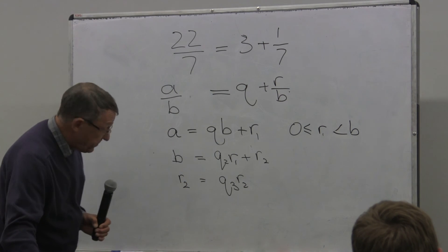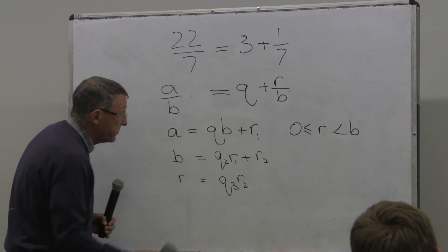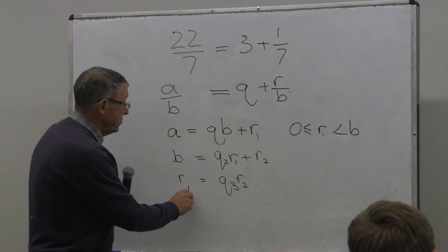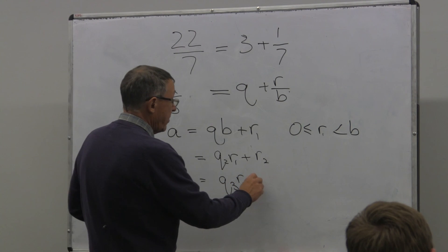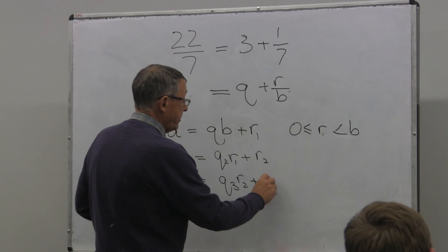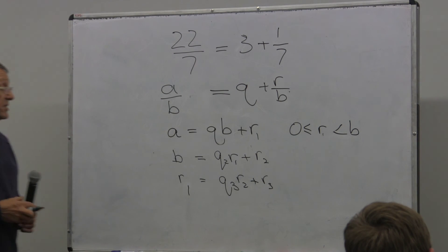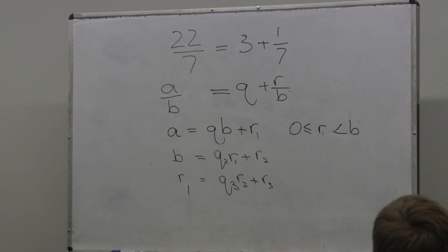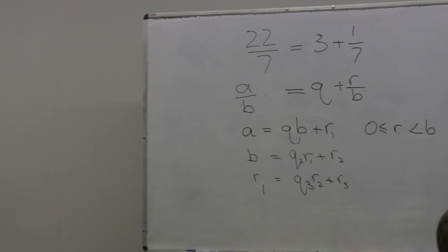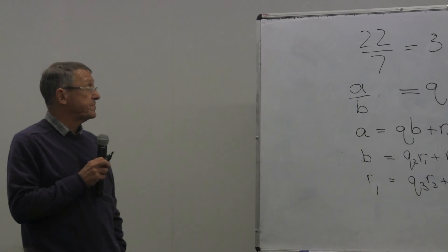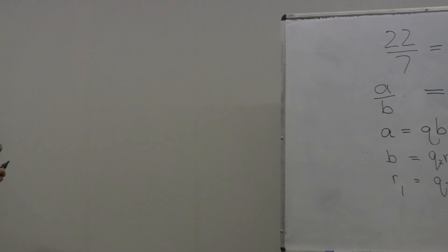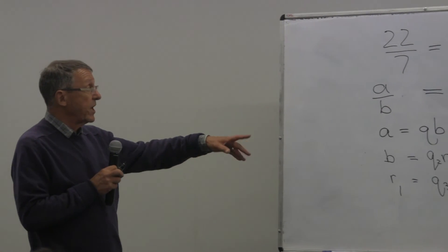And now, anything we've done once, we can do again. R2 is less than R1. So we can say, as long as R2 is not 0, we can say R1 divided by R2 will give us a third quotient and a third remainder.